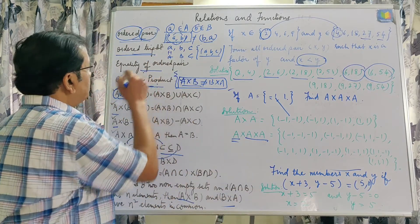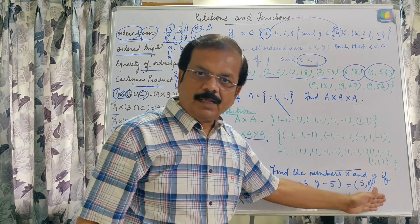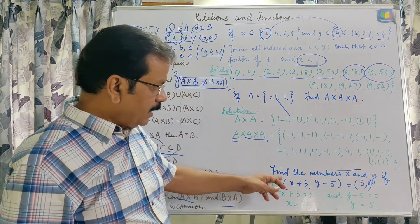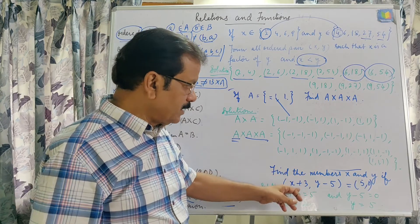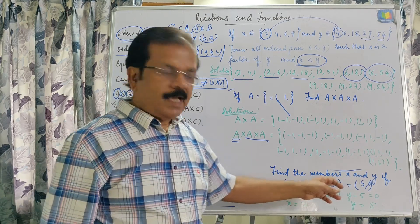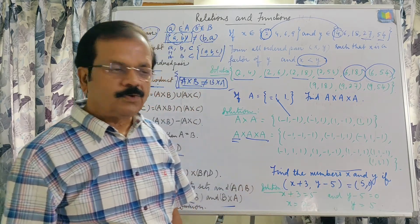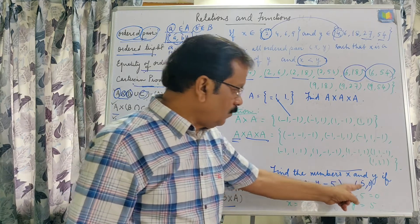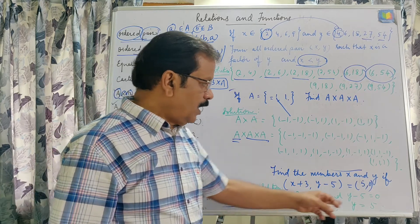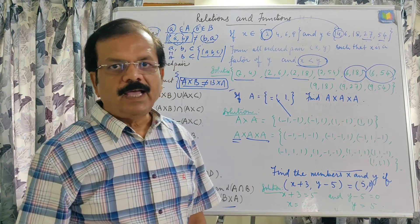The third question is related to equality of ordered pairs. If two ordered pairs are equal, their corresponding elements will be equal. We are given: (x + 3, y − 5) = (5, 0). Find x and y. So x + 3 = 5 and y − 5 = 0, giving x = 2 and y = 5. This way we find the values of x and y.